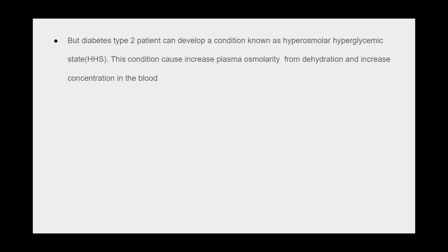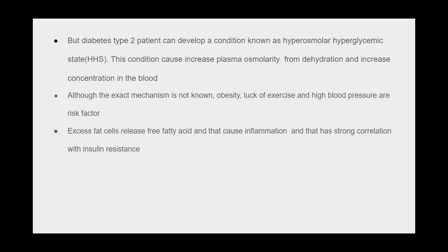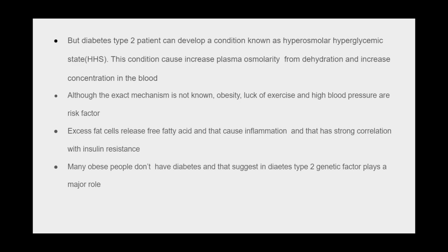Type 2 diabetes patients can develop a condition known as hyperosmolar hyperglycemic state (HHS), which causes increased plasma osmolarity from dehydration and increased blood concentration. Although the exact mechanism is not fully known, obesity, lack of exercise, and high blood pressure are risk factors. Excess fat cells release free fatty acids, causing inflammation that has a strong correlation with insulin resistance. Many obese people do not develop diabetes, suggesting that genetic factors play a major role in type 2 diabetes.